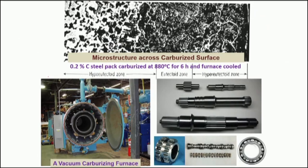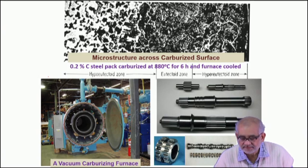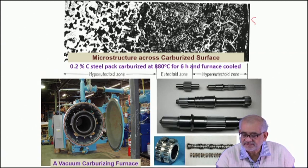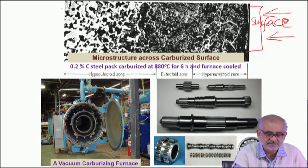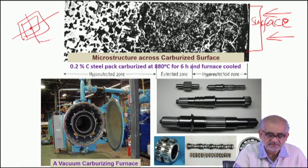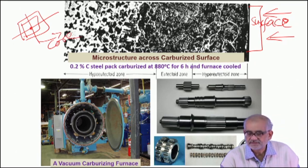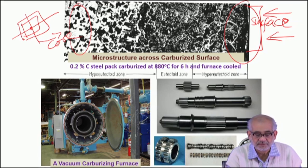In the carburizing process, the surface exposed to the gaseous environment has maximum carbon enrichment, while the core of the sample is unaffected — no change in composition at all. Taking a cross-section, the surface shows maximum carbon enrichment and this gradually decreases toward the core.